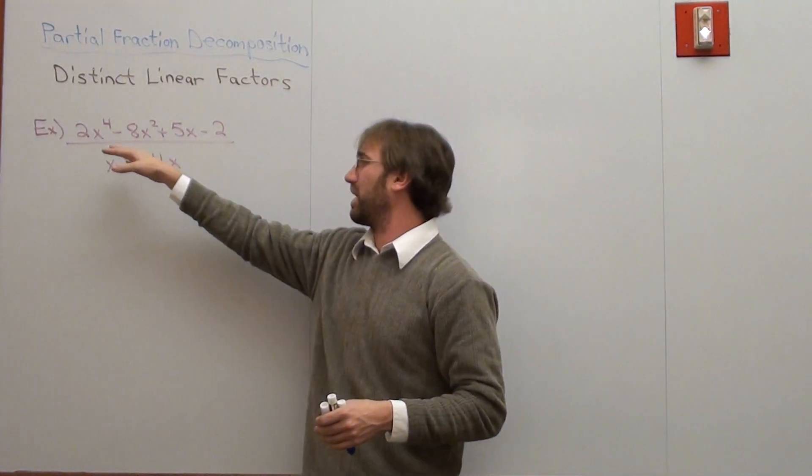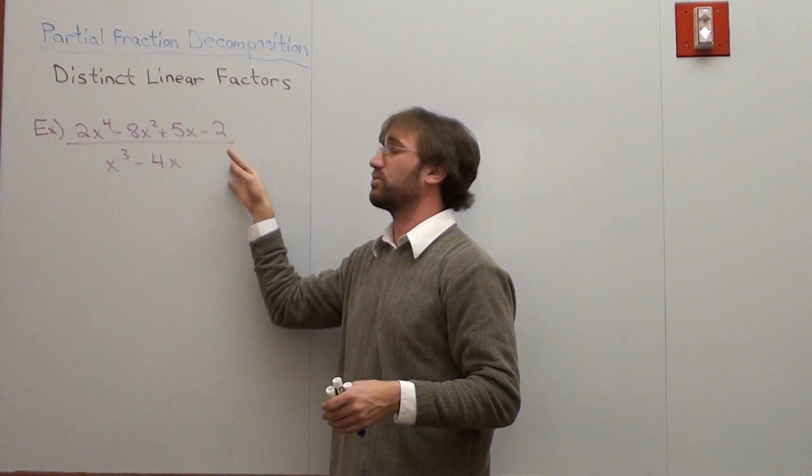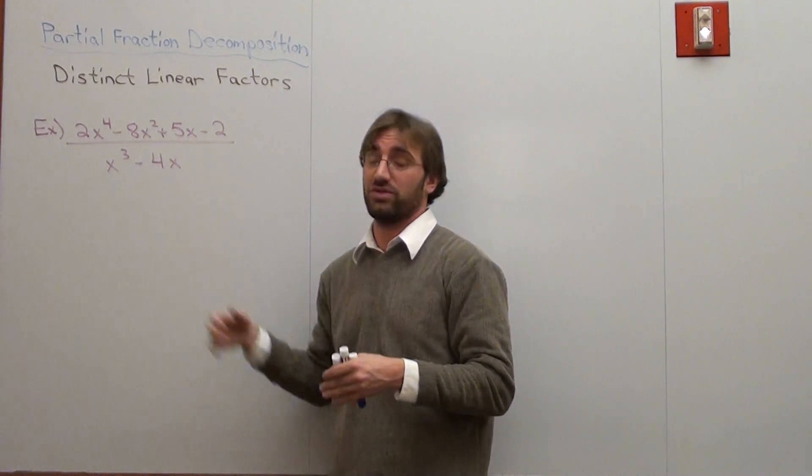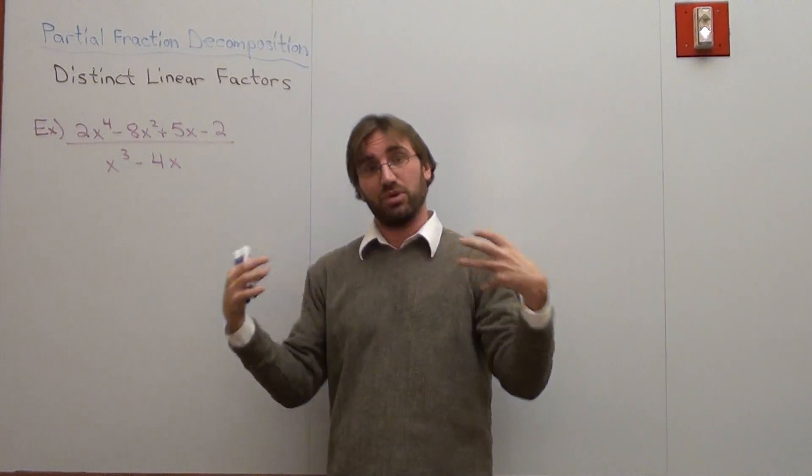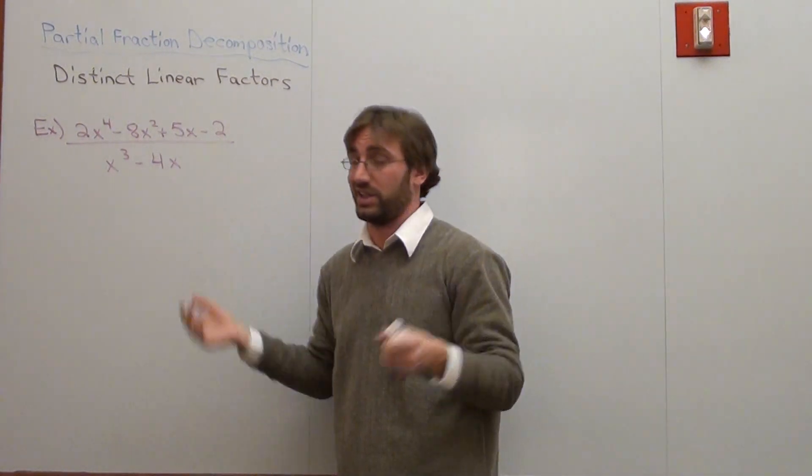We've got this problem where we have 2x to the fourth minus 8x squared plus 5x minus 2 over x cubed minus 4x. Our ultimate goal is to turn this really big fraction into separate fractions, partial fractions.